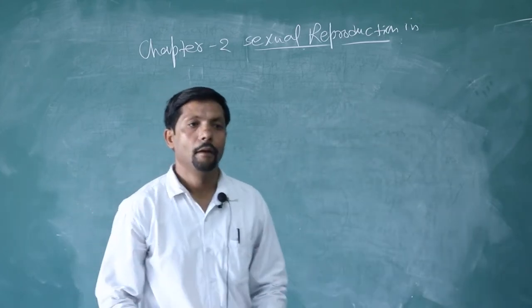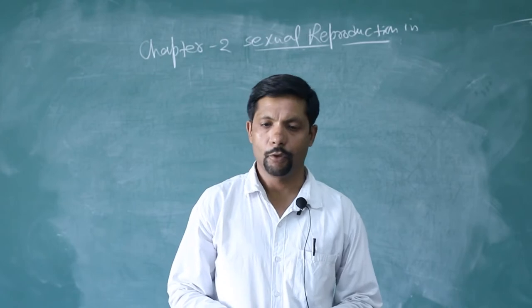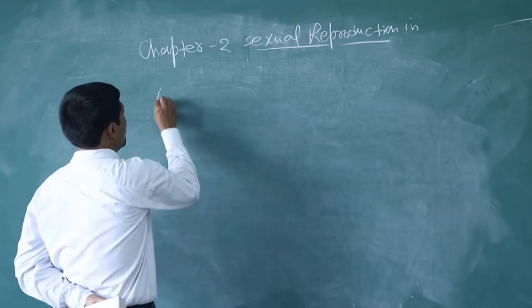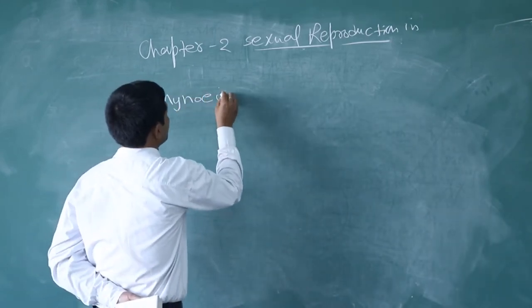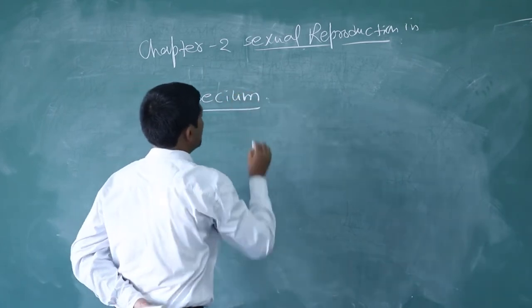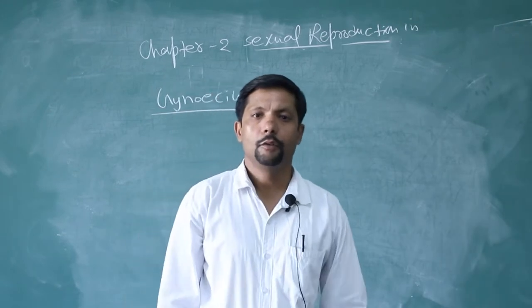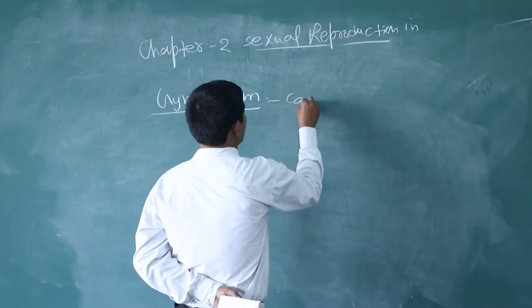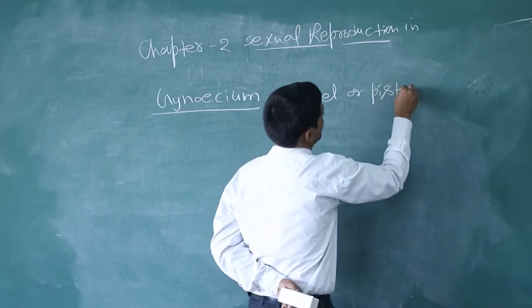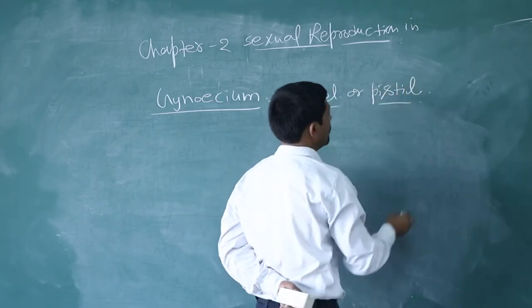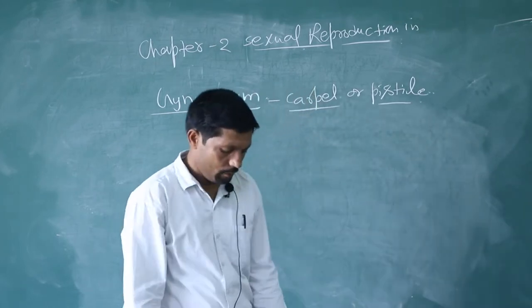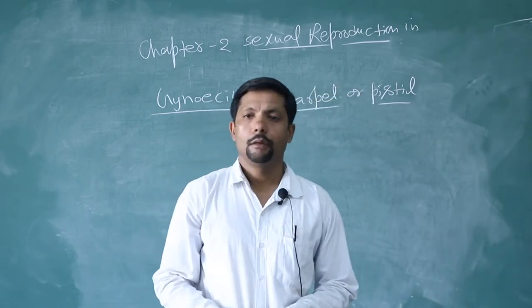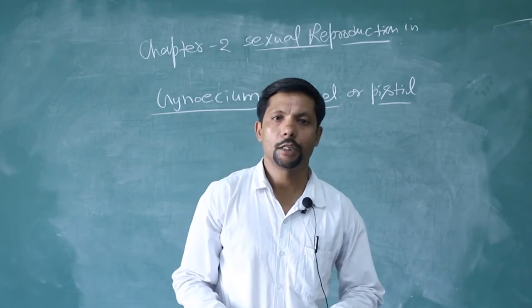This is the structure of the male reproductive part of the flower. Now we come to the female reproductive part, which is called the gynoecium. The gynoecium represents the female reproductive part, commonly called carpel or pistil. Each gynoecium is composed of three parts: stigma, style, and ovary.